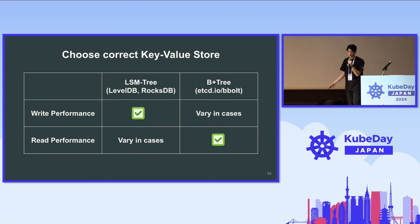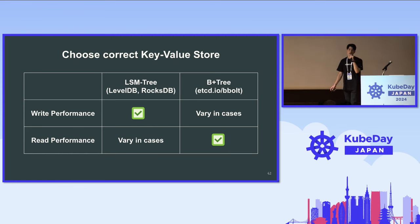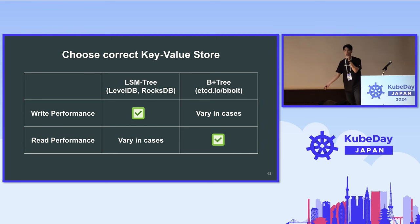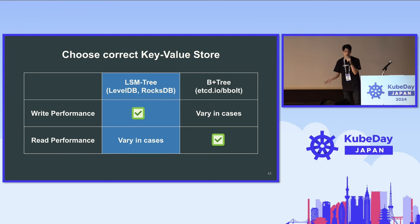Choosing the right key-value store is a really important thing. Shard aggregator is write-intensive workload because reading only happens once — when flushing data into object storage. That's why we chose an LSM tree-based database, specifically LevelDB. You can also use RocksDB, but LSM tree is really optimized for write performance.